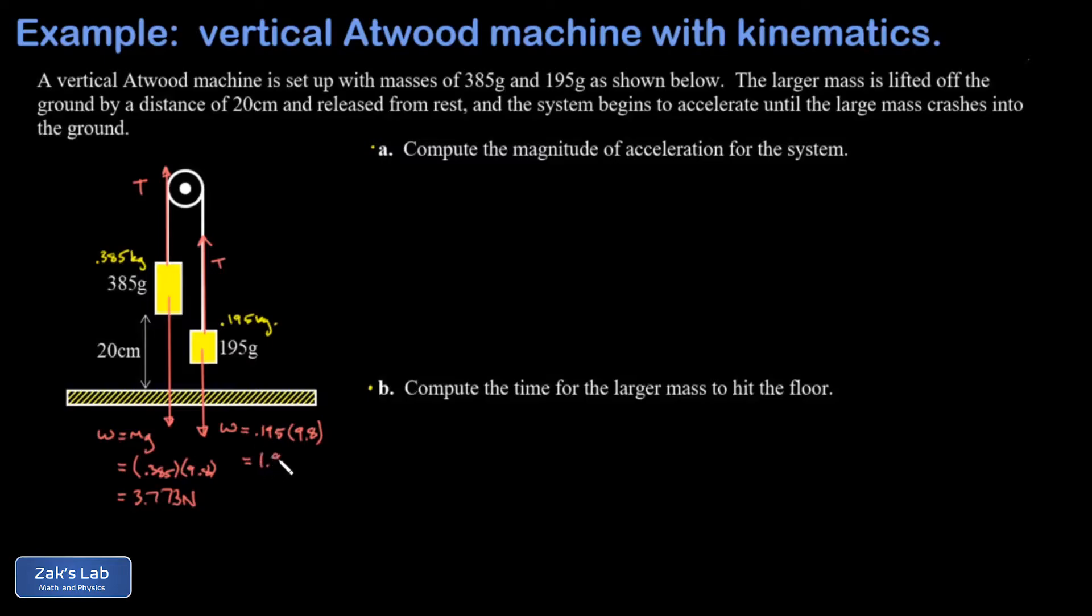Next I need to be clear about the coordinate system I'm using to analyze the motion of each object. It's important here to make the actual direction of the acceleration the positive direction as you analyze each one. The large one is accelerating downward so downward is going to be positive for the analysis, and the small one is accelerating upward so upward is going to be the positive direction for that one.